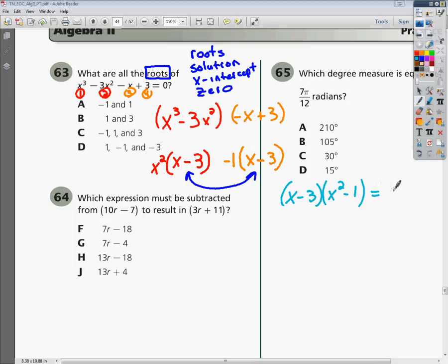And then set those equal to 0 and solve. So if I take x minus 3, set it equal to 0, all I have to do is add 3 to both sides because that's the opposite of subtraction. That goes away, and one of our answers should be x equals 3.